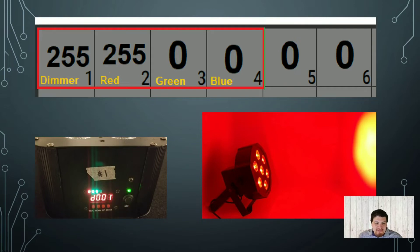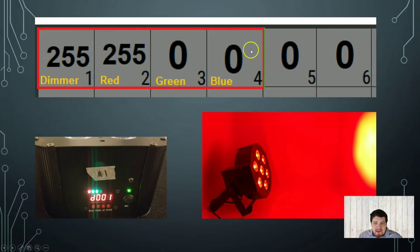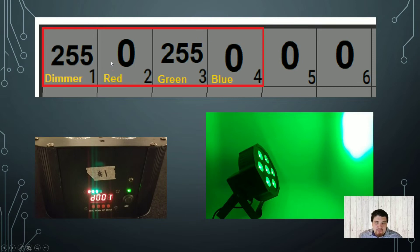When a fixture receives DMX input, it receives all 512 values. But since we know the address is set to 1 and it listens to a range of 4, we care about channels 1, 2, 3, and 4. In this example, channels 1 and 2 are set to 255 — the max — and the rest are 0. Channel 1 controls the brightness and channel 2 controls the amount of red. When I set channel 2 to 0 but set channel 3 to 255, channel 3 controls the amount of green, so the color turns green.